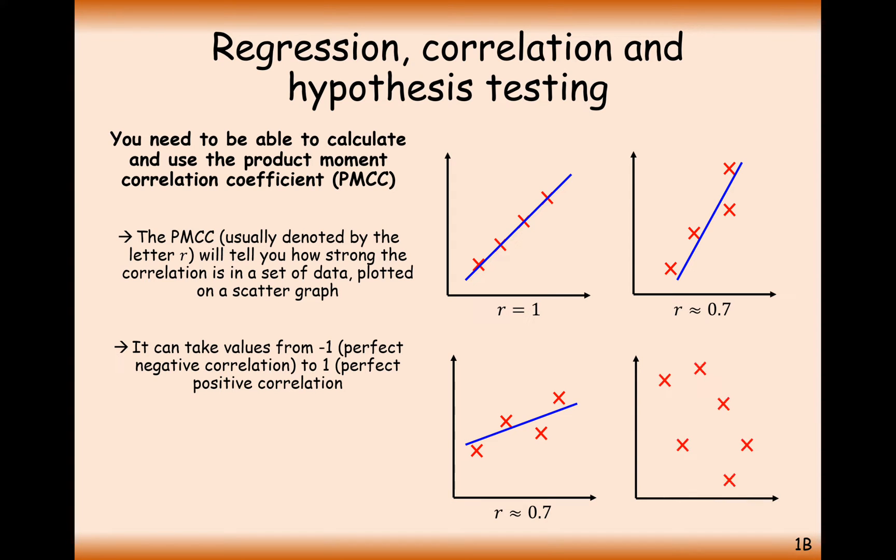And the last one, if it's going downhill, then we say that has a negative product moment correlation coefficient. Basically, R is going to be a number between 1 to minus 1, negative correlation on this side, positive correlation on this side, and 0 means no correlation at all.